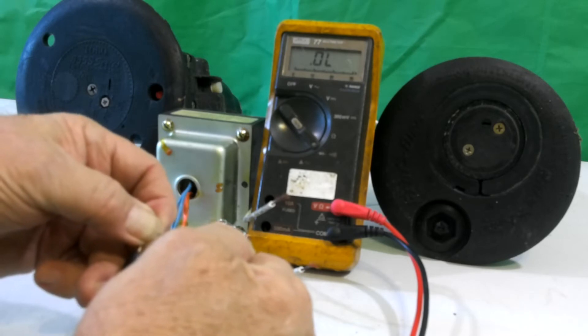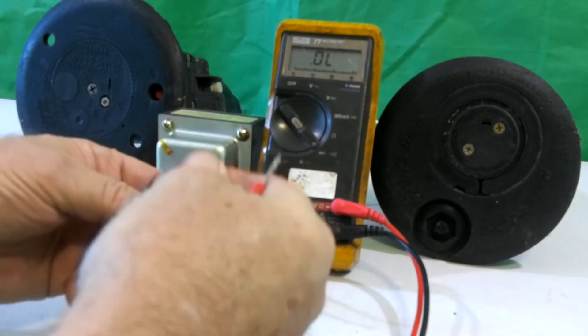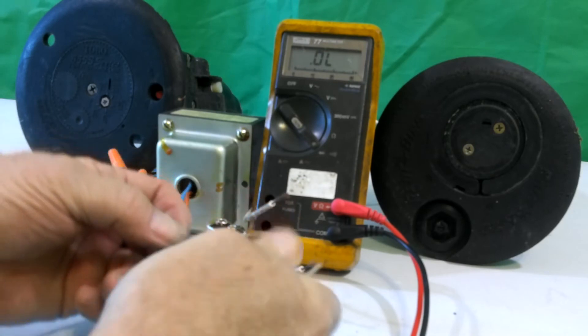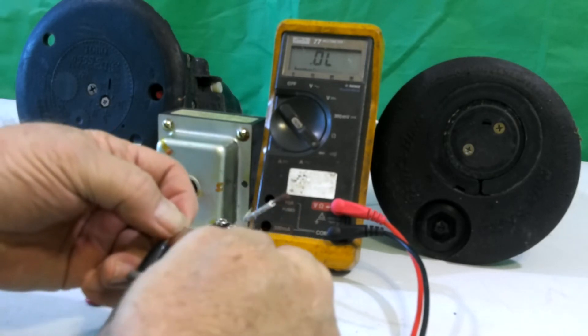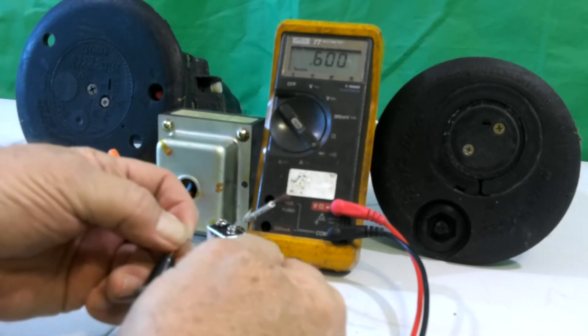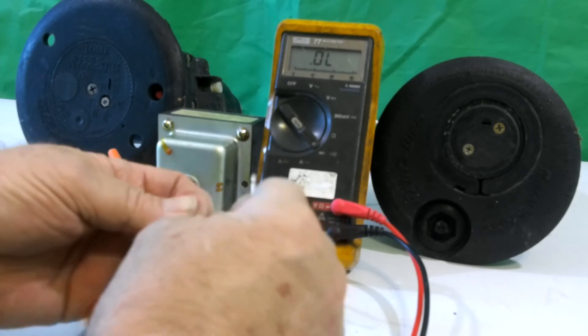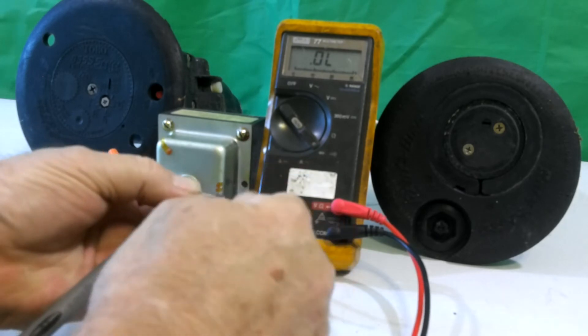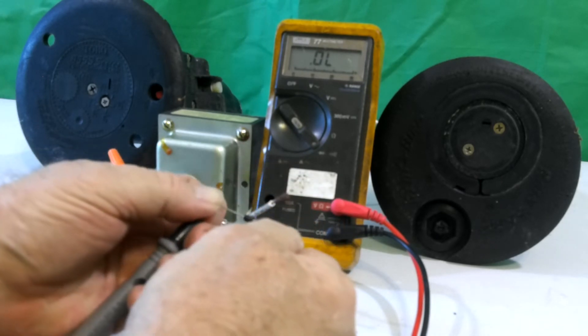And you'll notice that the meter does not give us a reading. If I reverse that so that the negative probe is to the positive side and the positive probe is on the negative side, you'll notice we get a reading. Should I get that reading with this diode in the correct position, that would say that the diode is defective.